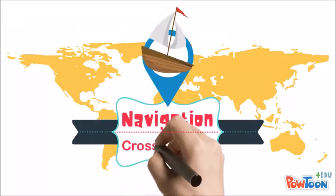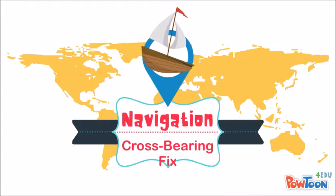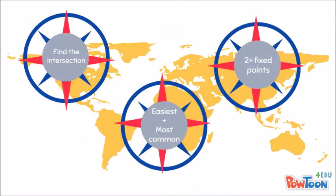The key things to remember when looking at a cross-bearing fix is that you must have two or more fixed points in order to use it. It is the easiest and most common method of fixing your position, and the whole aim is finding where these points intersect when we draw the lines.